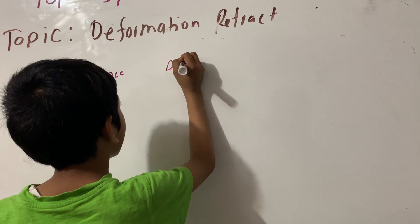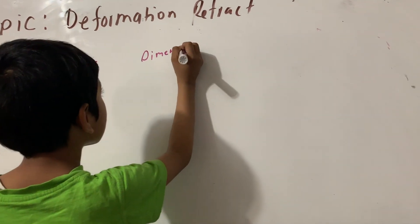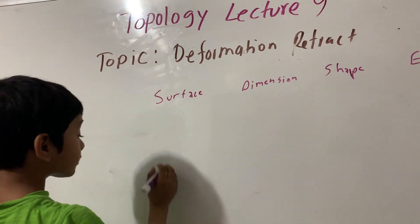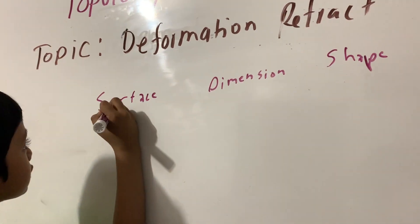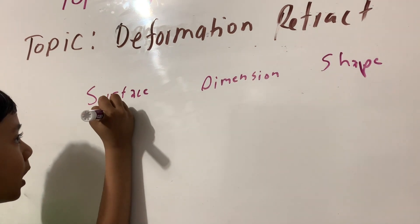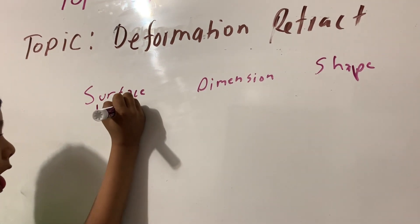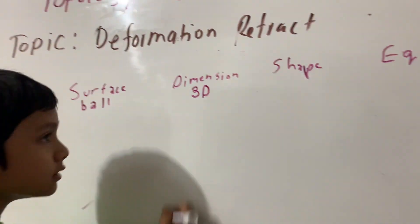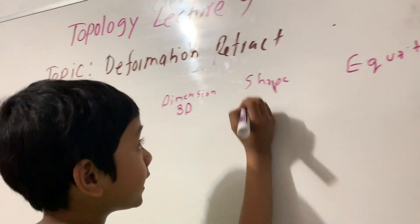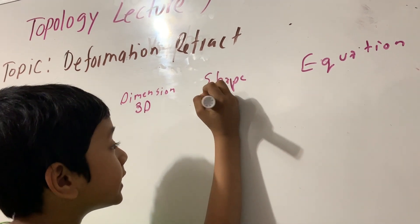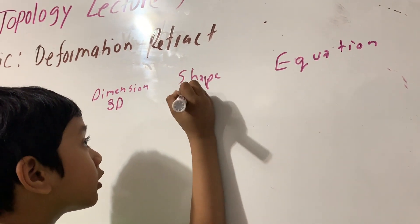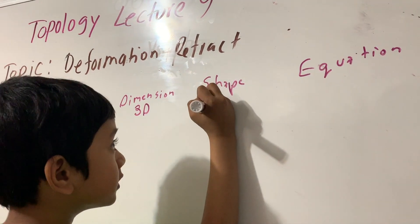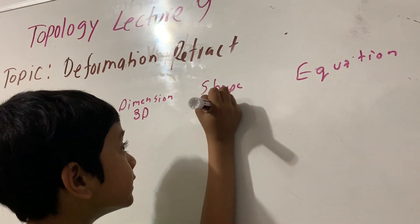Surface, dimension. So the surface is called a ball, the dimension is 3D, the shape of it is basically just a sphere, but it has it inside, so just a sphere with it inside.